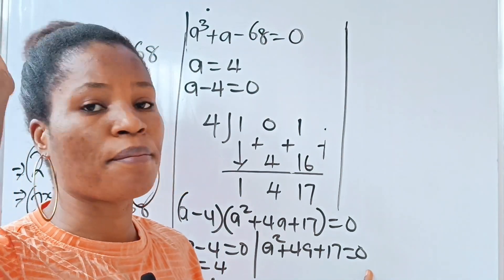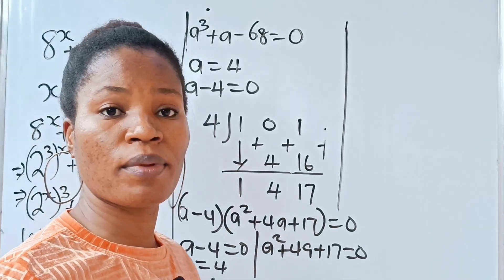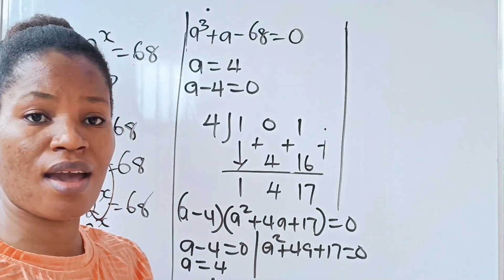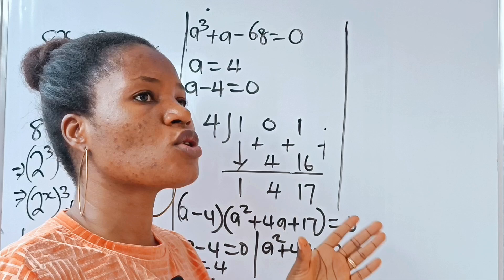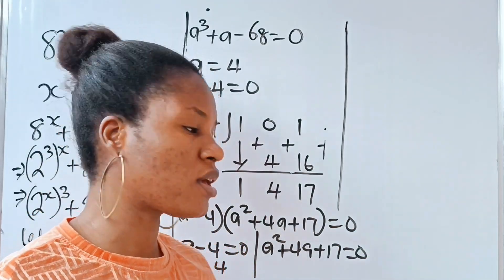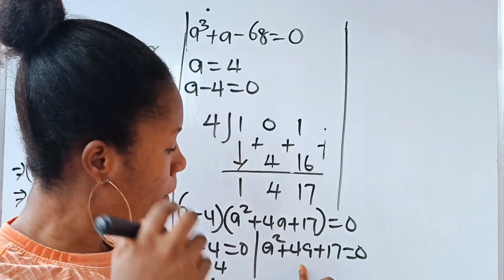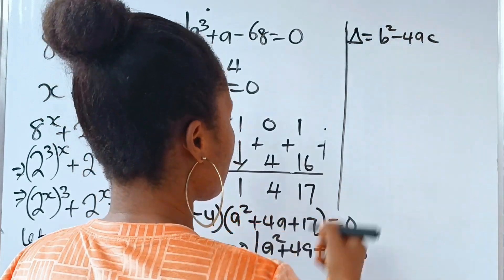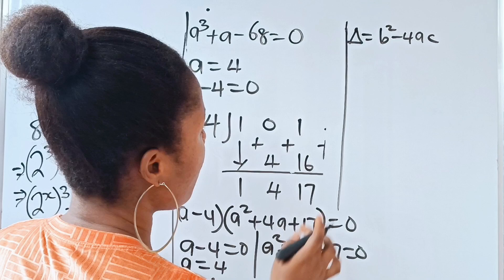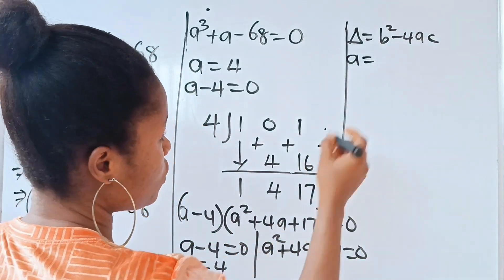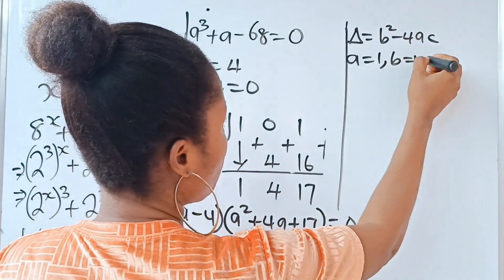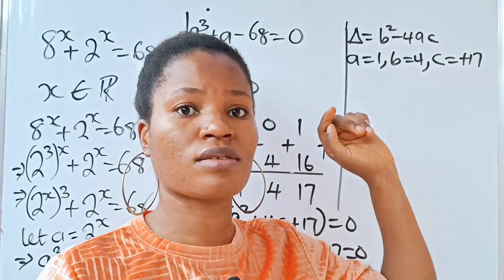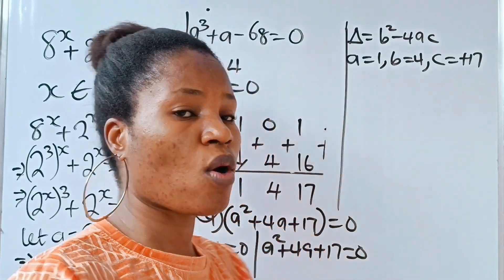For the second case, we would use the quadratic formula to solve for a. But we are told that x is real, so we don't need any complex solutions. Let's check if the quadratic gives complex roots by using the discriminant: B squared minus 4AC. Here A is 1, B is 4, and C is 17. Substituting: the discriminant equals 4 squared minus 4 times 1 times 17.